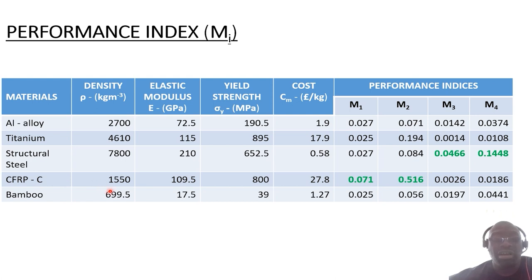These are the densities: aluminum 2700 kilograms per meter cubed, titanium 4610, structural steel 7800, carbon composite 1550, and bamboo 699.5. The elastic modulus for aluminum is 72.5 GPa, structural steel 210, and bamboo 17.5. You can also include a differentiating factor, looking at what the impacts of these indices are when it comes to cost.